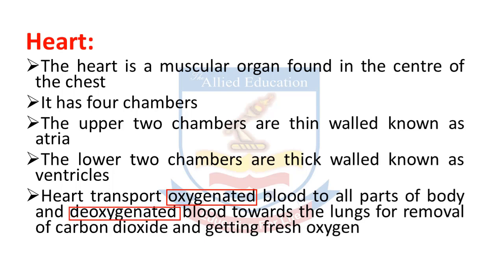Deoxygenated blood se kya muraad hai? Yeh aisa blood hai jis mein oxygen maujood nahin hoti, yaani oxygen-poor blood. To dil ka kaam kya hai: yeh oxygenated blood ko body parts ki taraf transport karta hai aur deoxygenated blood ko lungs ki taraf transport karta hai taaki carbon dioxide nikaali ja sake aur fresh oxygen hasil ki ja sake.